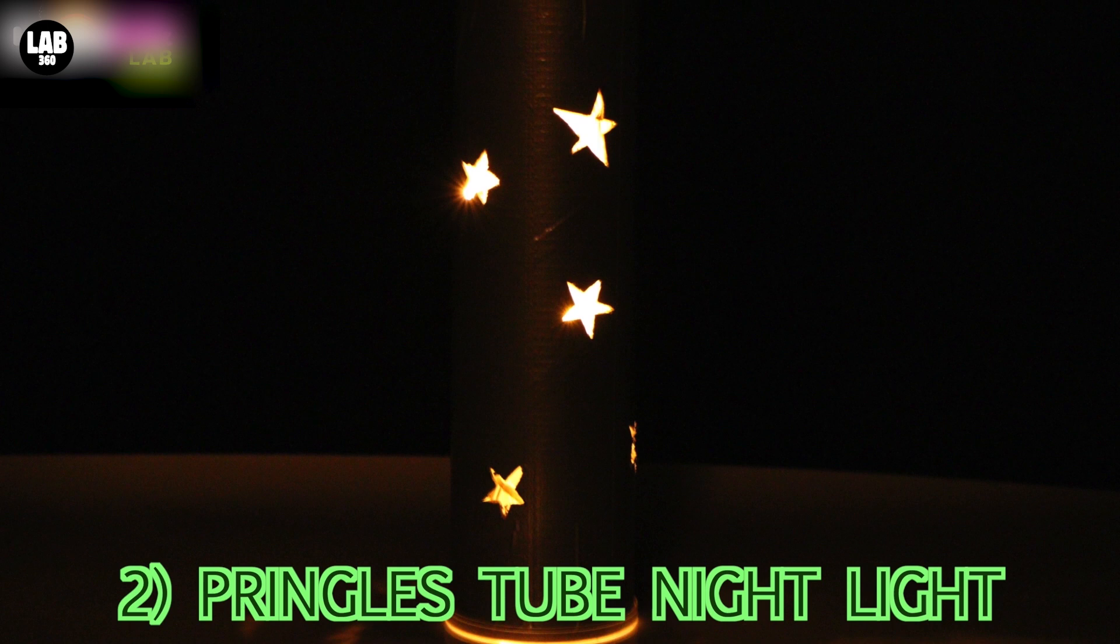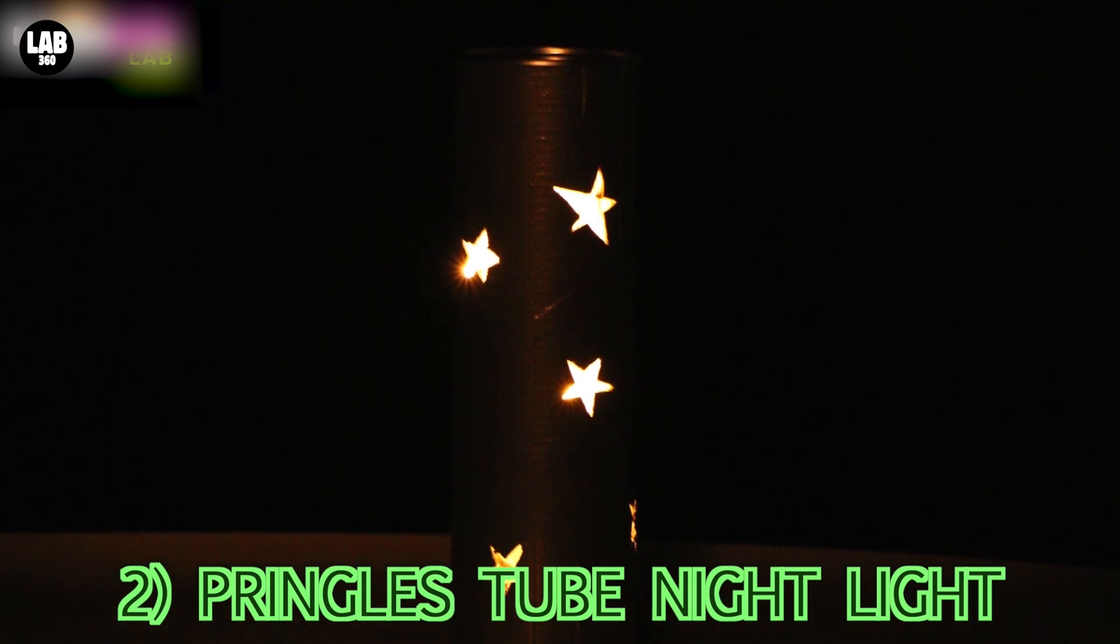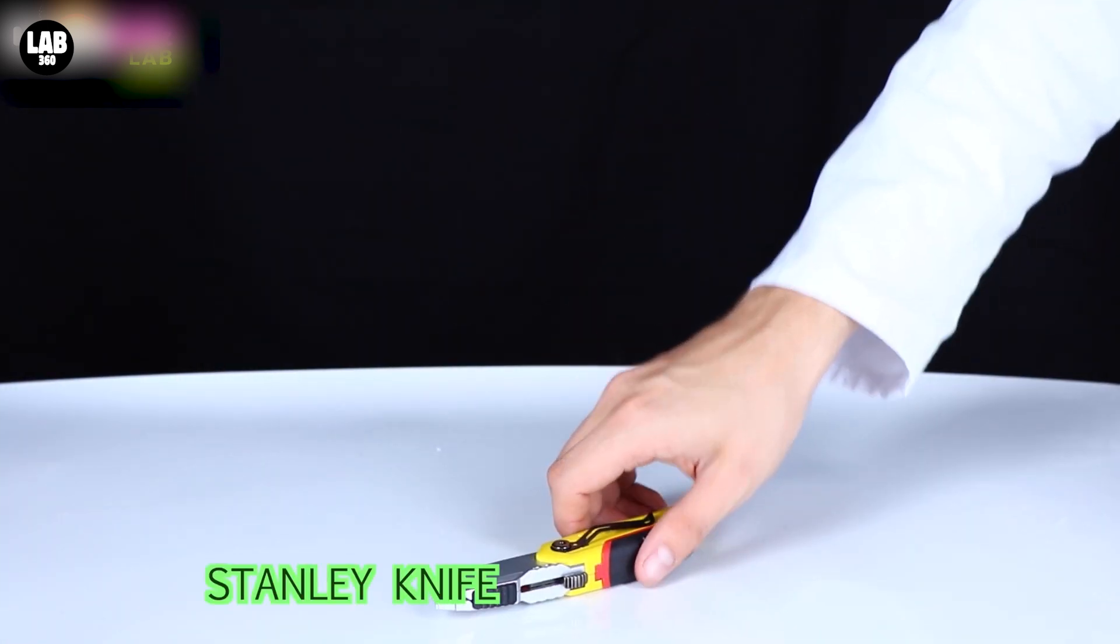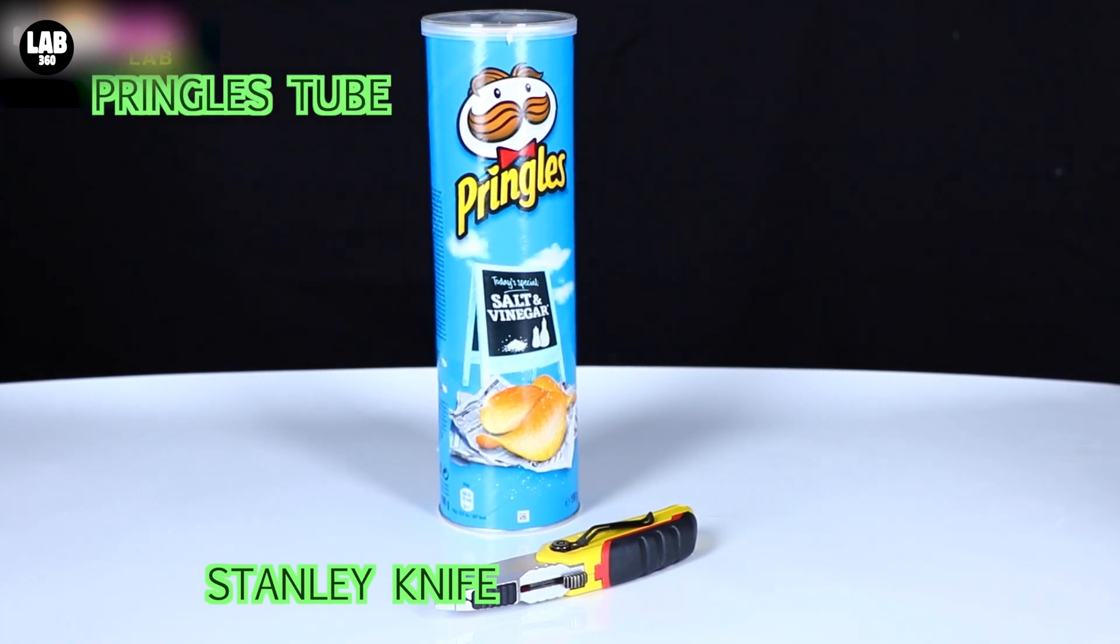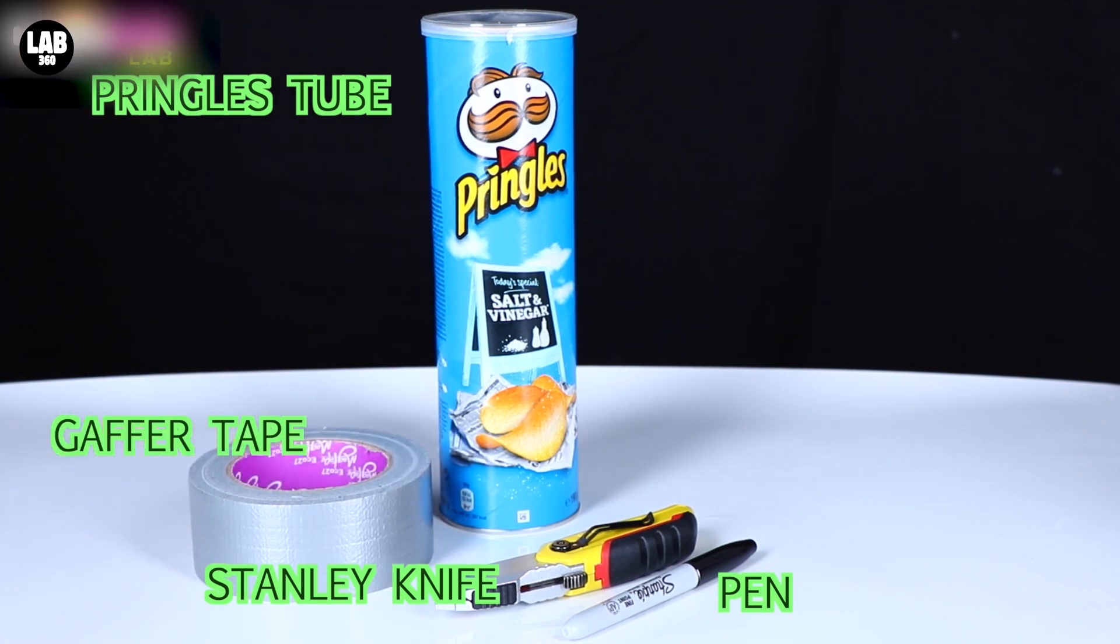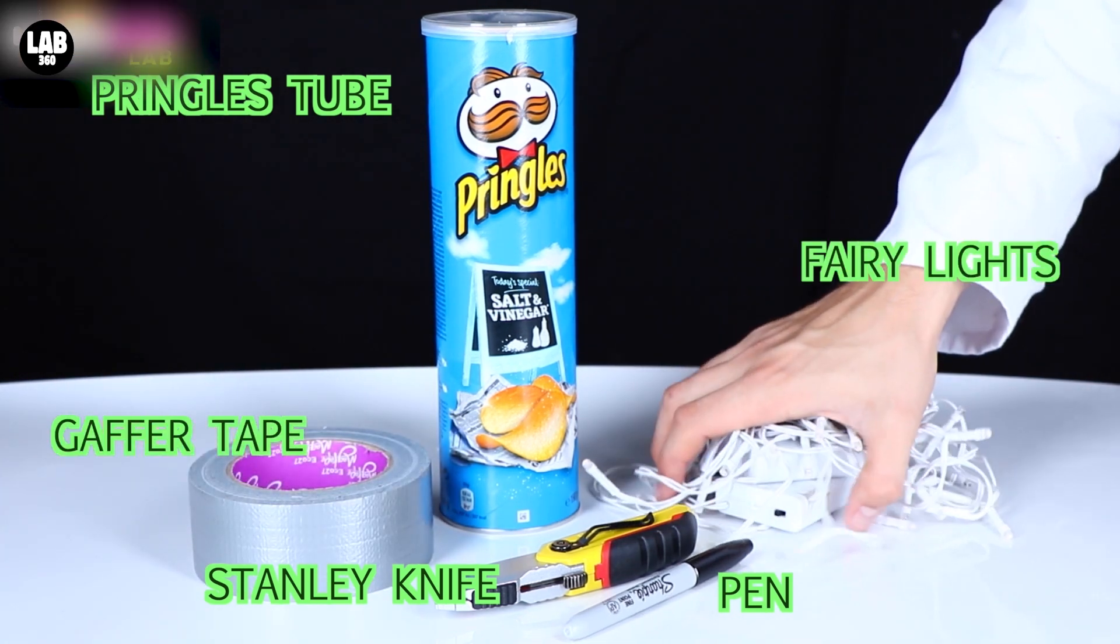Number two. The Pringles tube night light. You're going to need a Stanley knife, a Pringles tube, a pen, gaffer tape and some fairy lights.